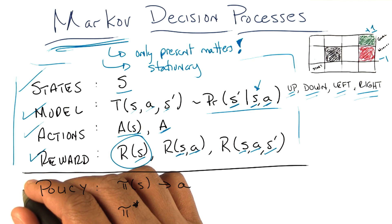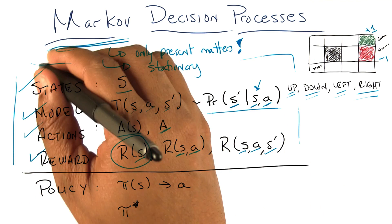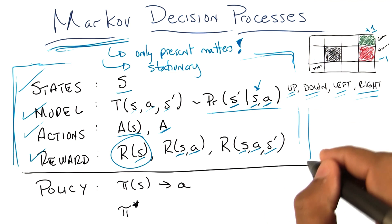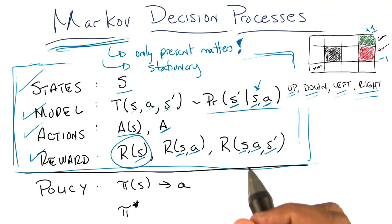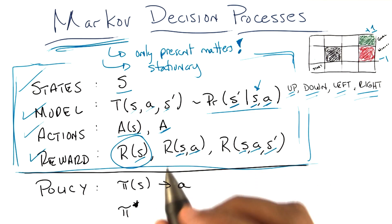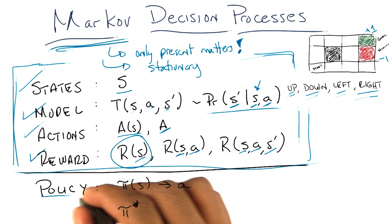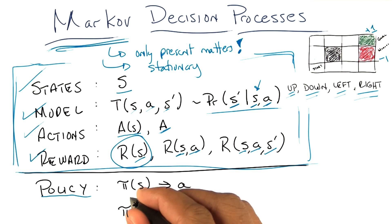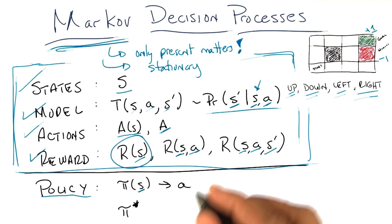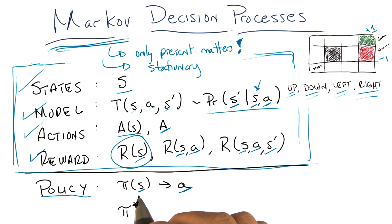Speaking of solutions, this is the last little bit of thing that you need to know. This defines a problem, but what we also want to have whenever we have a problem is a solution. So the solution to a Markov decision process is something called a policy. What a policy does is it's a function that takes in a state and returns an action — for any given state that you're in, it tells you the action that you should take.